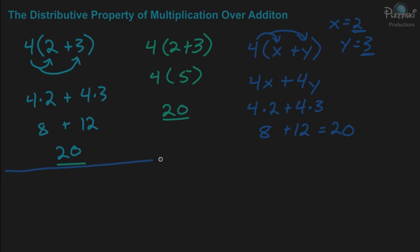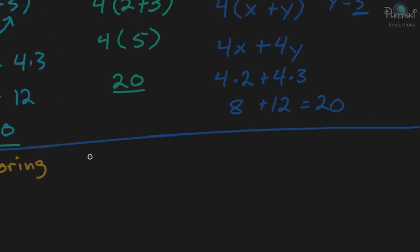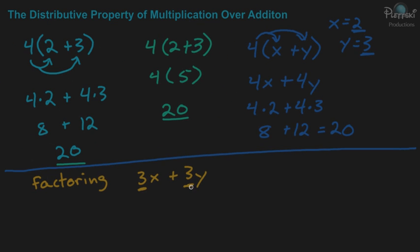So now, just to jump ahead, let's look at the reverse of the distributive property, which is factoring. That's when you start with an expression, and then you want to factor something out of that expression. So an example might be 3x plus 3y, and I want to factor this — I want to factor a 3 out of each of these terms. They both have a 3 in common; they're both being multiplied by a 3.